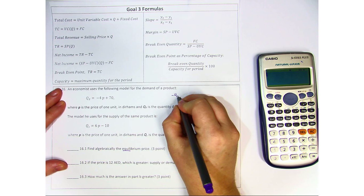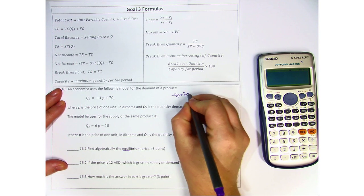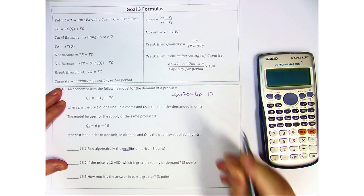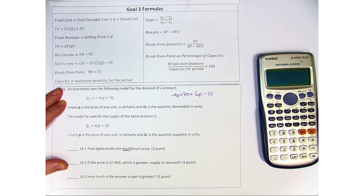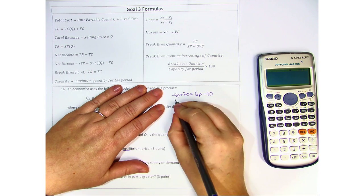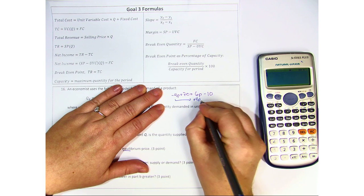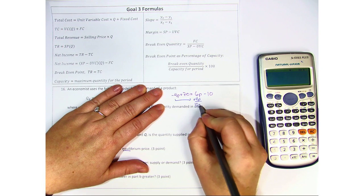So negative 4p plus 70 equals 6p minus 10. We're going to start by moving the negative 4 over to meet the 6. Now when it moves over, it becomes positive, and that gives me 10p.